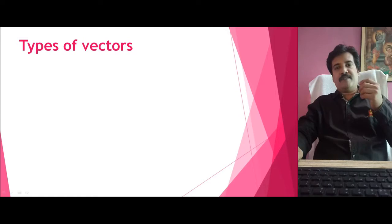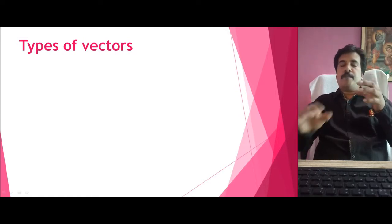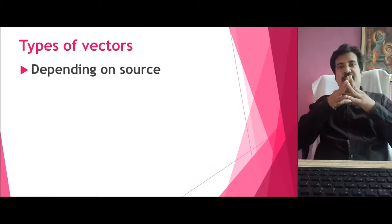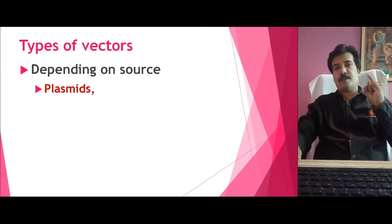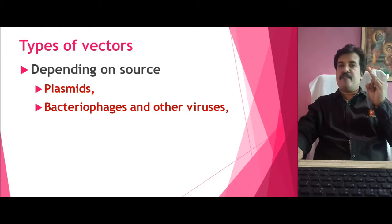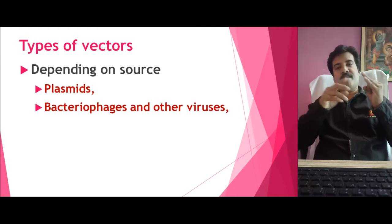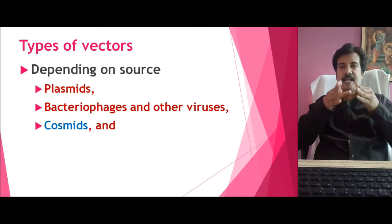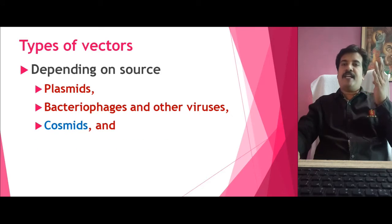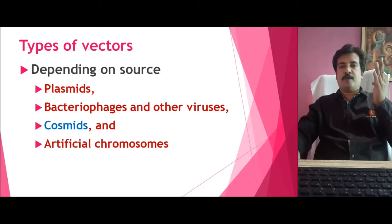We can classify vectors into different types. Depending on the source, we can classify the vector into four major types. One is the Plasmid Vector, which is an extra-chromosomal DNA of a bacteria. Second is a Bacteriophage vector, or we can call it a viral vector. And third is the Cosmid Vector, which we are going to discuss elaborately today. And the final one is the Artificial Chromosomes.